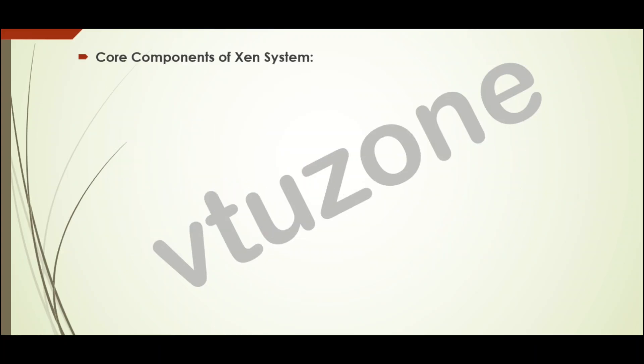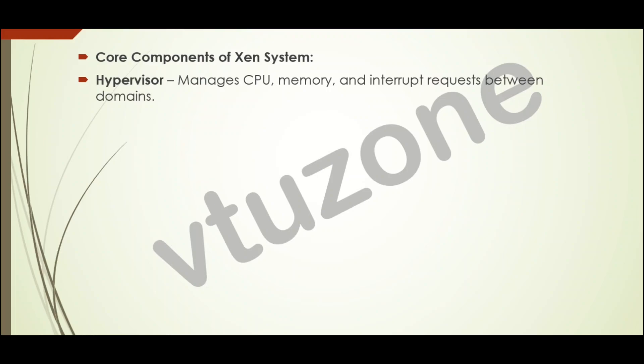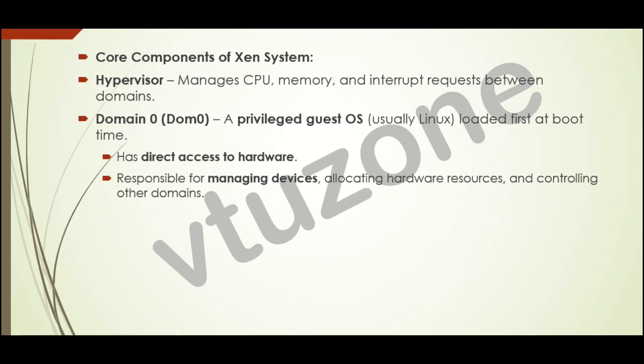The next topic is the core components of a Xen system. The Xen hypervisor is the brain of the system — it manages how the CPU, memory, and system interrupts are shared between virtual machines. Domain 0 is the first operating system that starts when the machine boots. It usually runs Linux and has full access to the physical hardware. Domain 0 handles device management, resource allocation, and controls all the virtual machines.